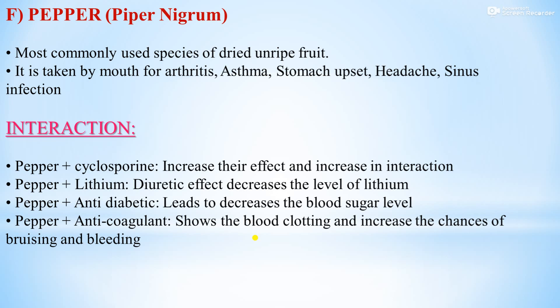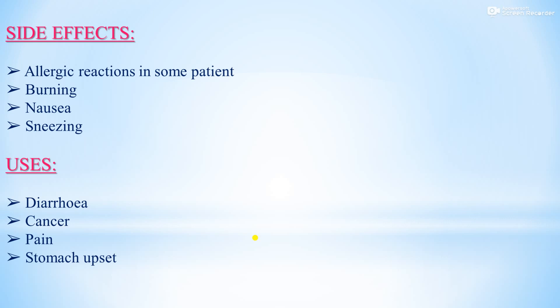The sixth drug is Pepper, that is Piper nigrum — most commonly used as a spice from dried unripe fruit. It is taken by mouth for arthritis, asthma, stomach upset, headache, and sinus infection. Interactions: Pepper with cyclosporine increases its effect; pepper with lithium shows a diuretic effect and decreases lithium levels; pepper plus anti-diabetic drugs decreases blood sugar; pepper plus anticoagulant drugs slows blood clotting and increases chances of bruising and bleeding. Side effects include allergic reactions, burning, nausea, and sneezing. Uses include diarrhea, cancer, pain, and stomach upset.